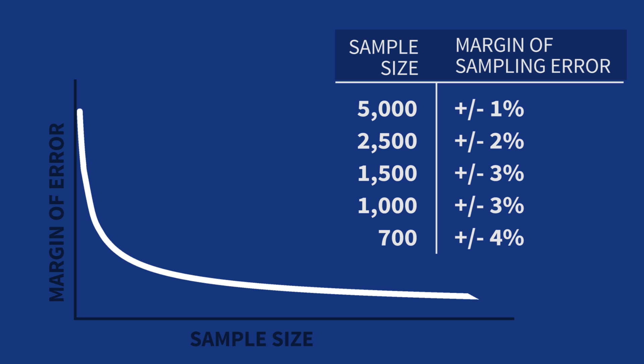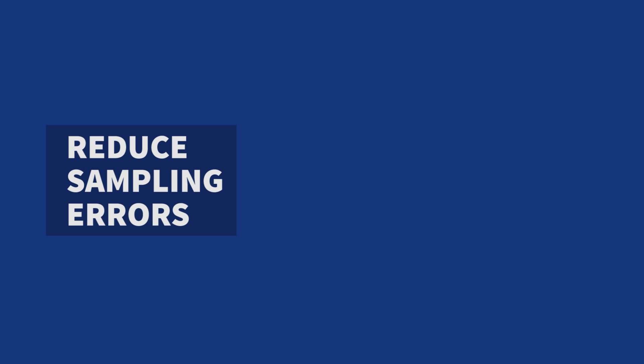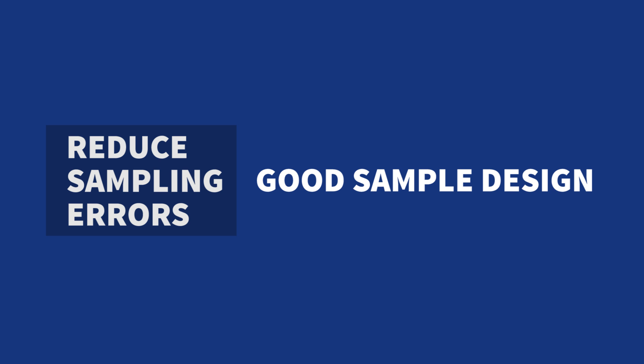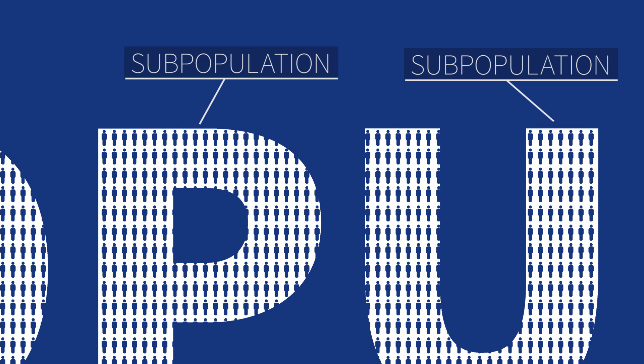As you can see in this chart, after a thousand cases, even if you more than double your sample size to 2,500 subjects, you only reduce your margin of error by 1%. You can also reduce sampling error with a good sampling design. For example, if your overall population has distinct subpopulations, then sampling each subpopulation independently may reduce sampling error. But these techniques can only reduce sampling error so far. The only way to remove sampling error completely would be to observe every element in a population, which is impractical, if not in some cases impossible.